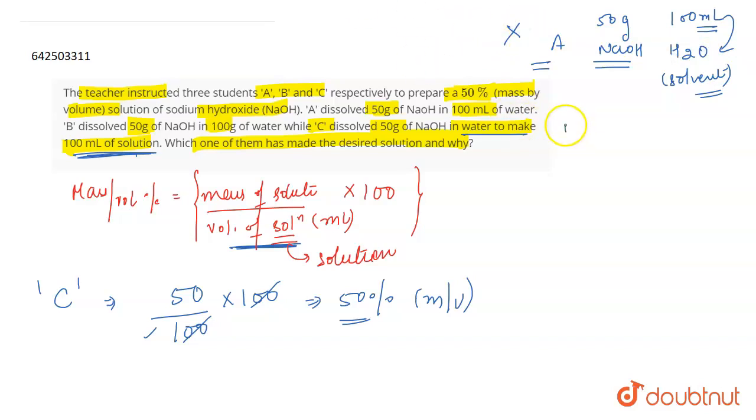Talking about B, what B did was dissolve 50g of NaOH in 100g of water. This is mass by mass, not mass by volume. We are talking about mass by volume here, so A was incorrect, B was incorrect, but C was correct.